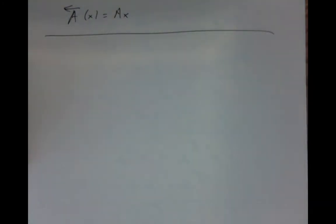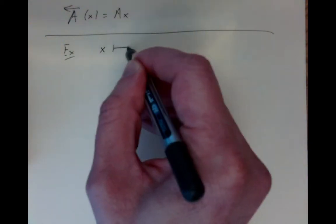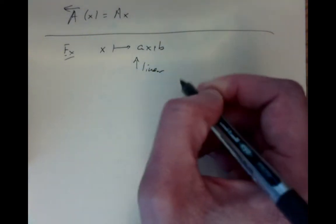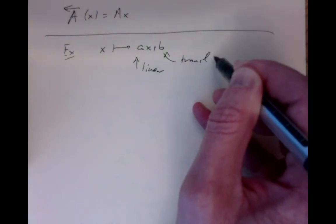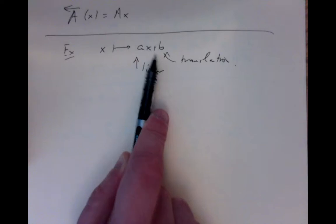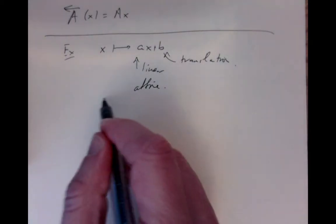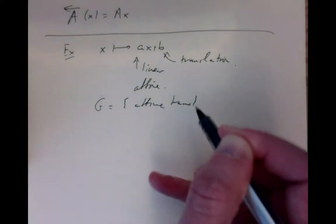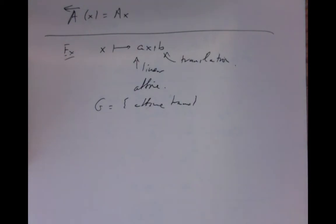A slight variation is affine transformations, which take a vector x to Ax plus b, where A is an invertible linear transformation and b is a constant translation vector. Once we pick a constant n-by-n matrix A and constant vector b, every vector is moved according to this rule. The group of all affine transformations — for any choice of invertible A and any vector b — is called the affine group.